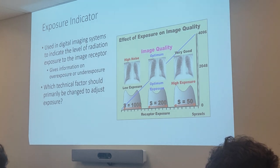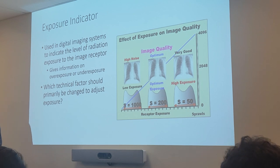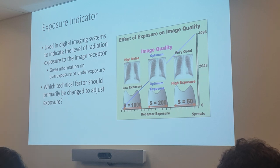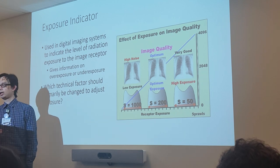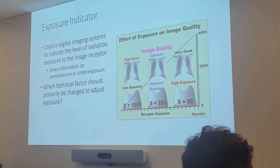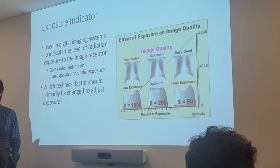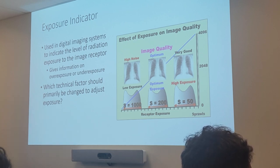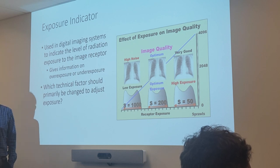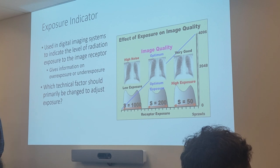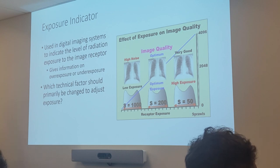A lot of times the tech might increase the contrast or brightness. If they do those things and send the image, what happens is you send your corrected data — the changed data — and now there's no way to retrieve the original data. The radiologist can still change the appearance on their own screens, but they're not working with the original data anymore, so you've given them something that doesn't quite accurately represent the patient.